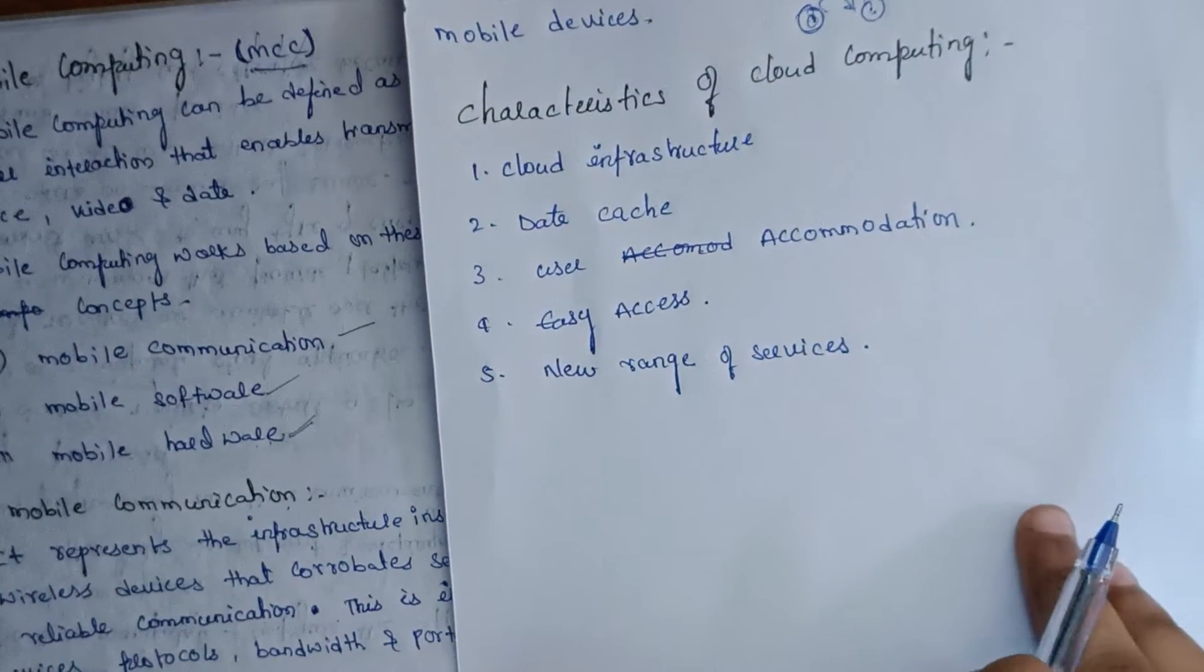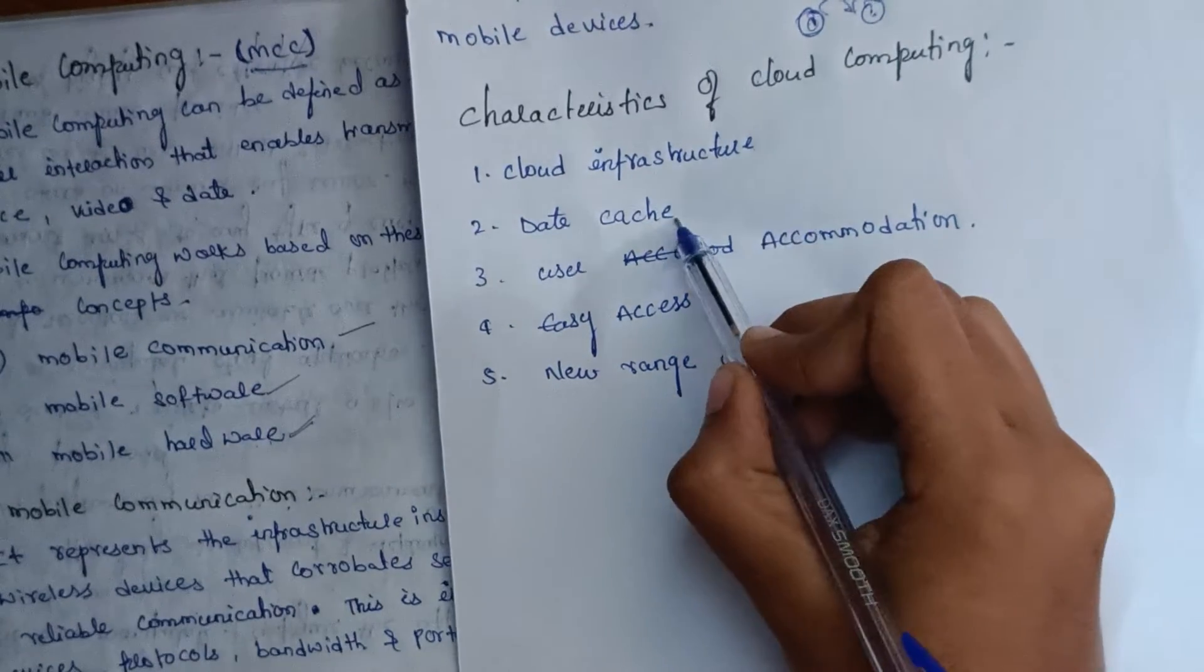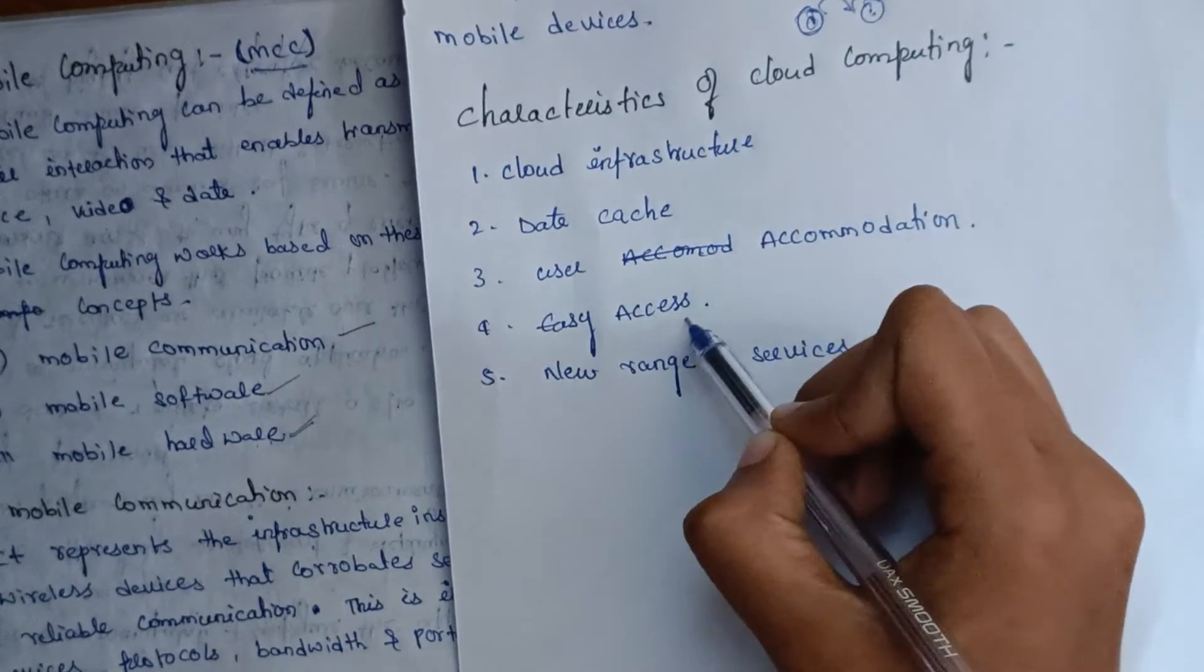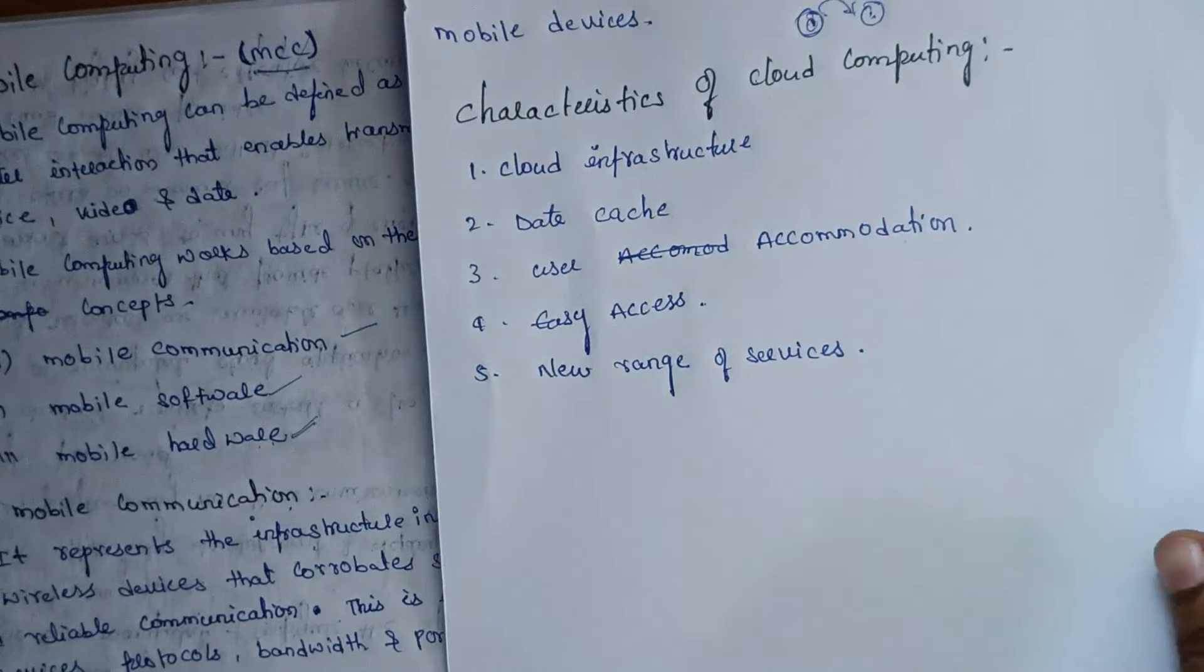Characteristics of mobile computing include cloud infrastructure, data cache, user accommodation, easy access, and a new range of services.